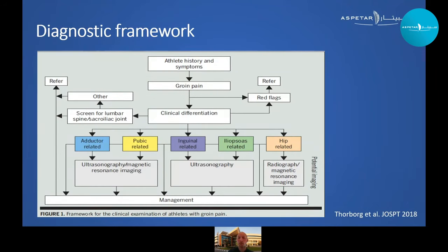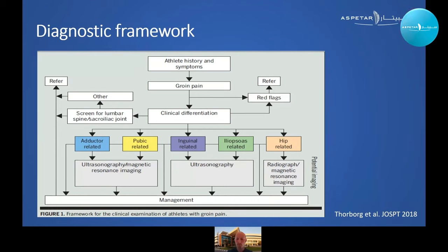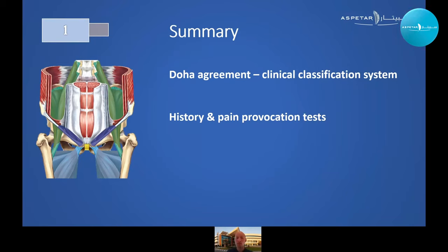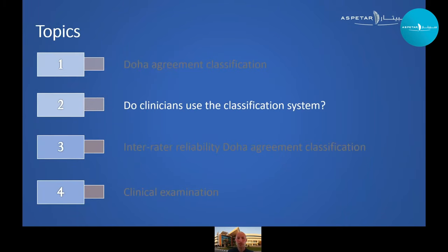This diagnostic framework by Thorborg and colleagues — also a recommended one-read study on an update of diagnosis and management of groin pain — presents a simple framework: when an athlete presents with groin pain, exclude red flags and more serious pathology, exclude the lumbar spine or SI joint, then after clinical examination classify the groin pain according to the Doha Agreement entities. Appropriate imaging can be ordered if it would help diagnosis or, more importantly, prognosis and management. In summary, the Doha Agreement is a clinical classification system where groin pain is classified based on injury history and pain provocation tests.